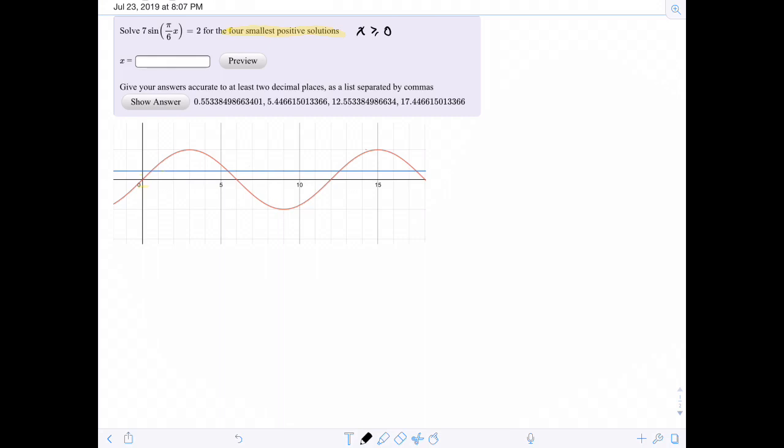I think the first thing we could do is graph these two pieces of the equation. So the first thing I did was I took 7 sine of pi over 6x and then equal to 2, and then I solved for sine of pi over 6x. And I got 2 sevenths. And so this is what I went ahead and I graphed.